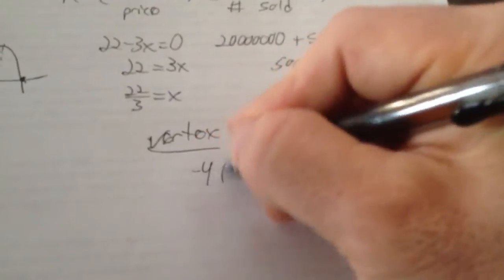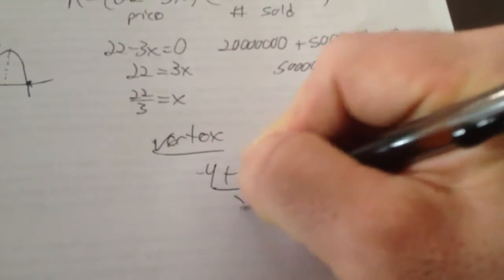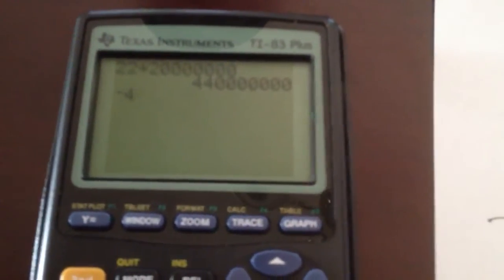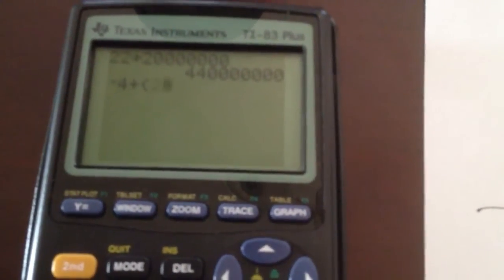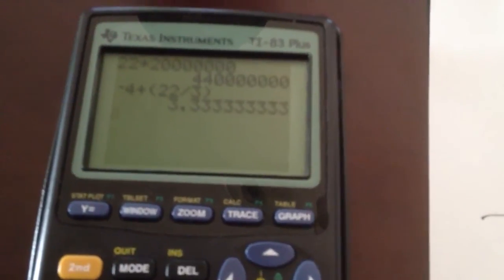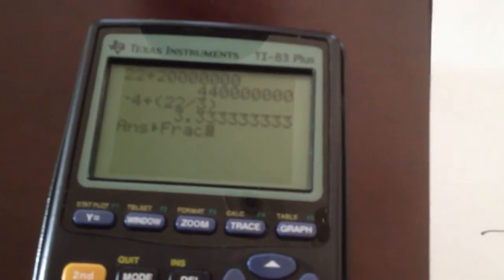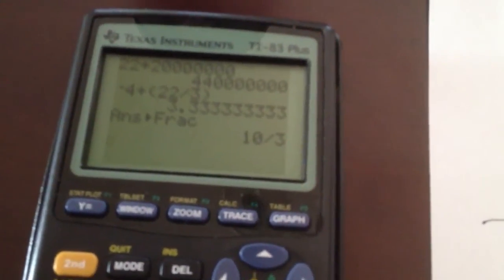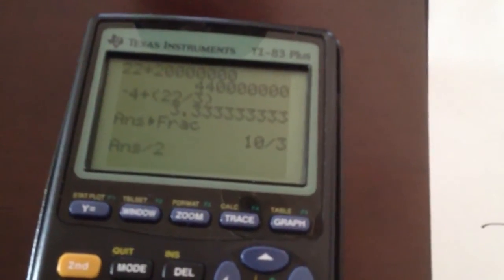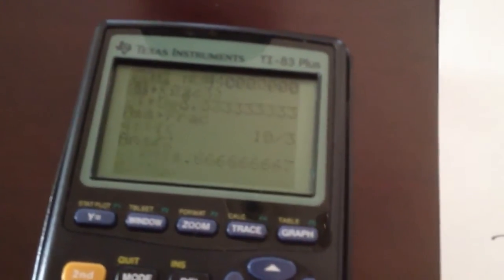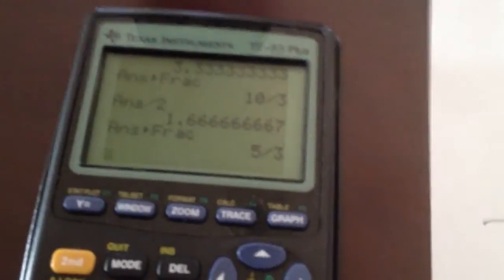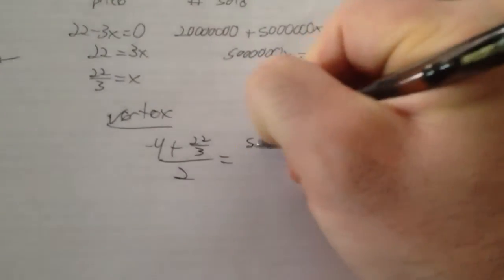So how do I find halfway in the middle? Well, I take those, I add them together, and I divide by 2. But yes, you're going to have to use the calculator a little bit here on this guy. So you take negative 4 plus that 22 over 3, press enter, math, enter, enter, changes that back to a fraction of 5 thirds. So 5 thirds is where my vertex is located.